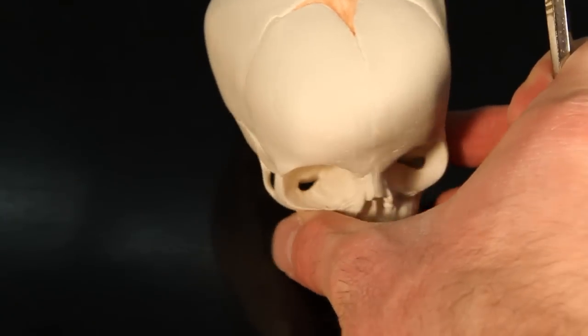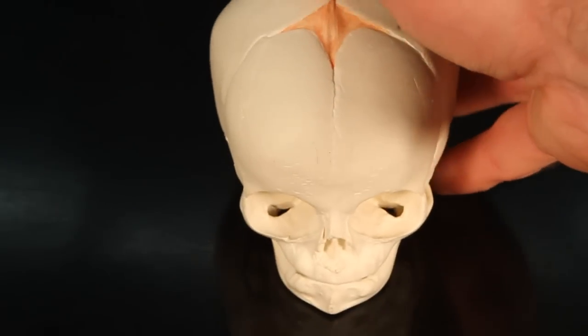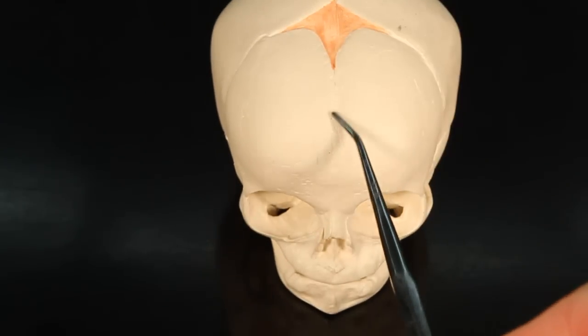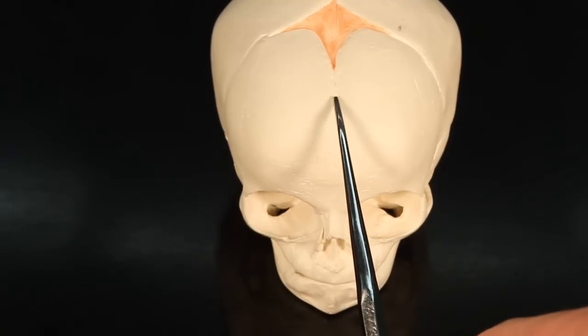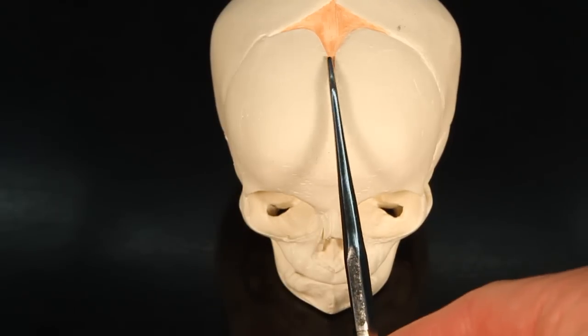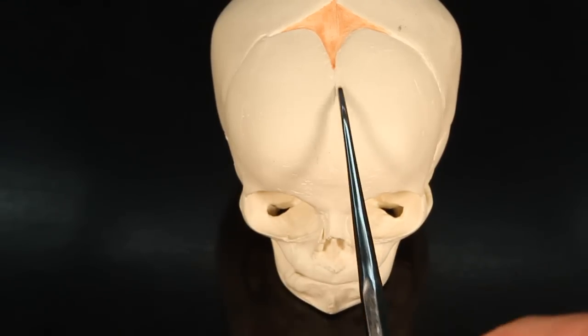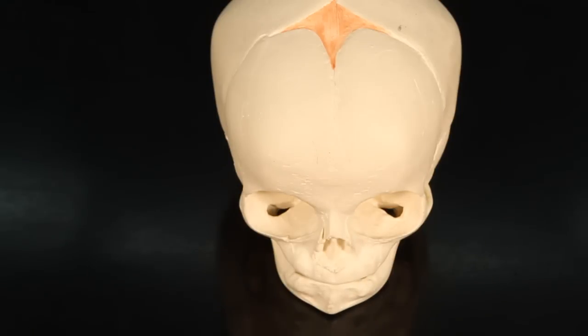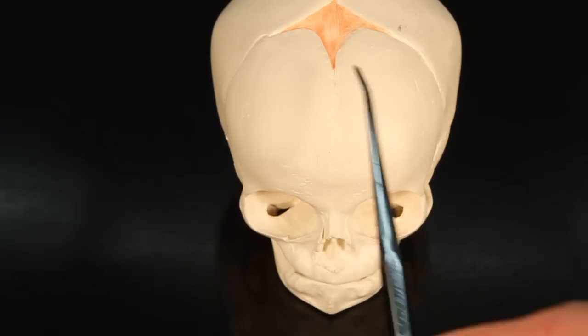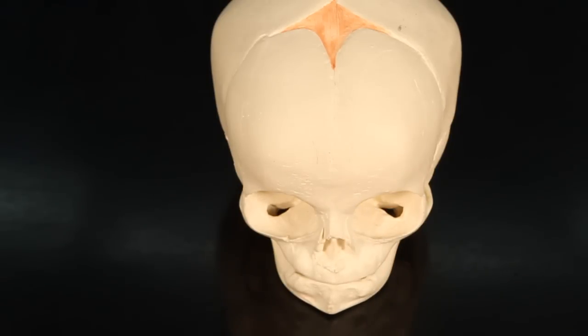The last structure that's going to be unique here is going to be this suture, which is called the metopic suture. It's actually splitting, or right through the middle of the frontal bone. So it's sometimes also known as the frontal suture.